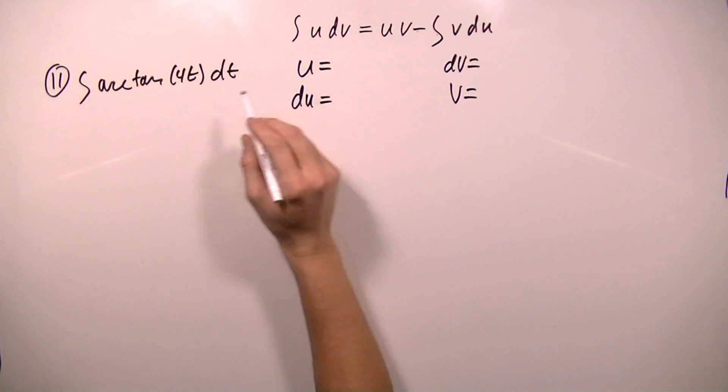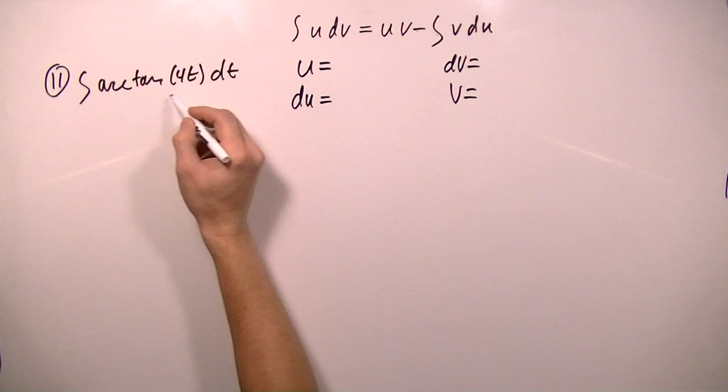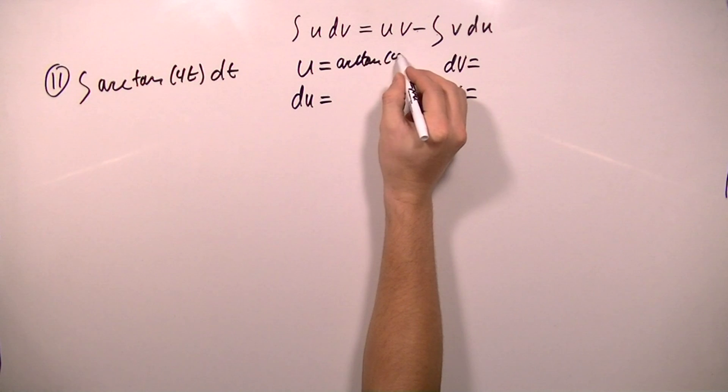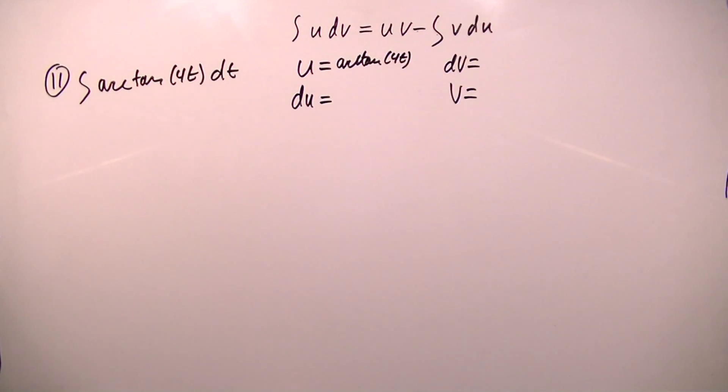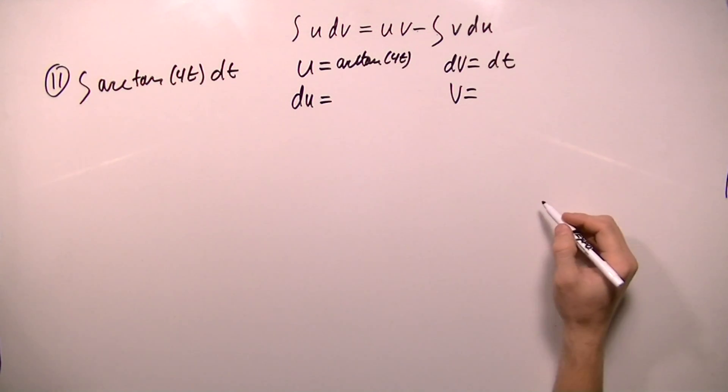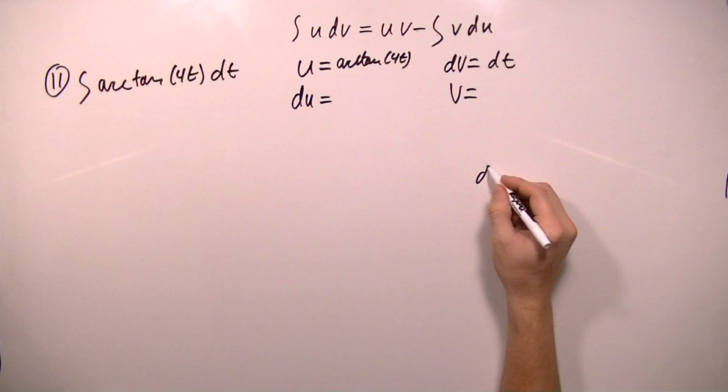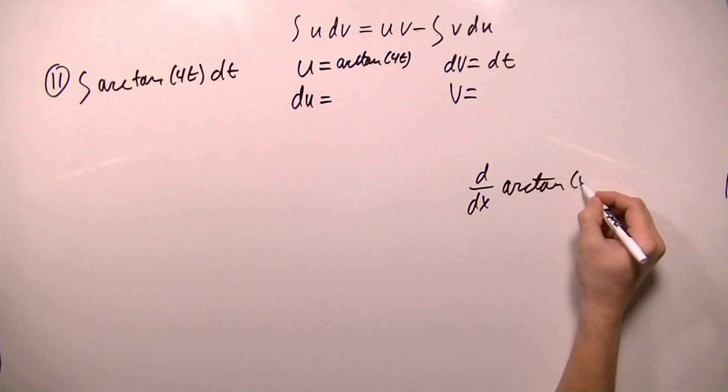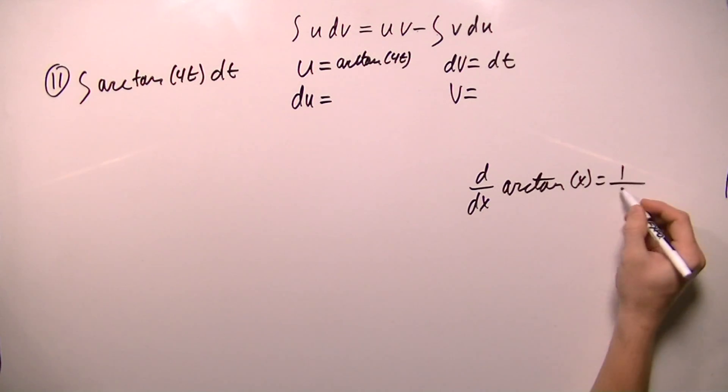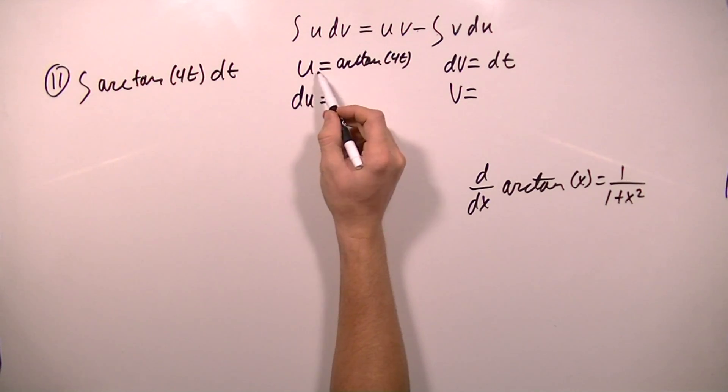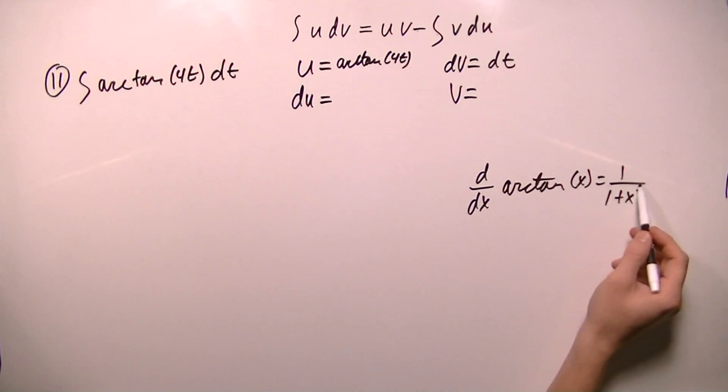So I've decided that I want u to be arctan 4t, and that means that dv will be dt. I want to make a note here that the derivative of arctan x equals 1 over 1 plus x squared. And you can click here for a proof. So when I go to take the derivative of u, arctan 4t, I'm going to have to use this.